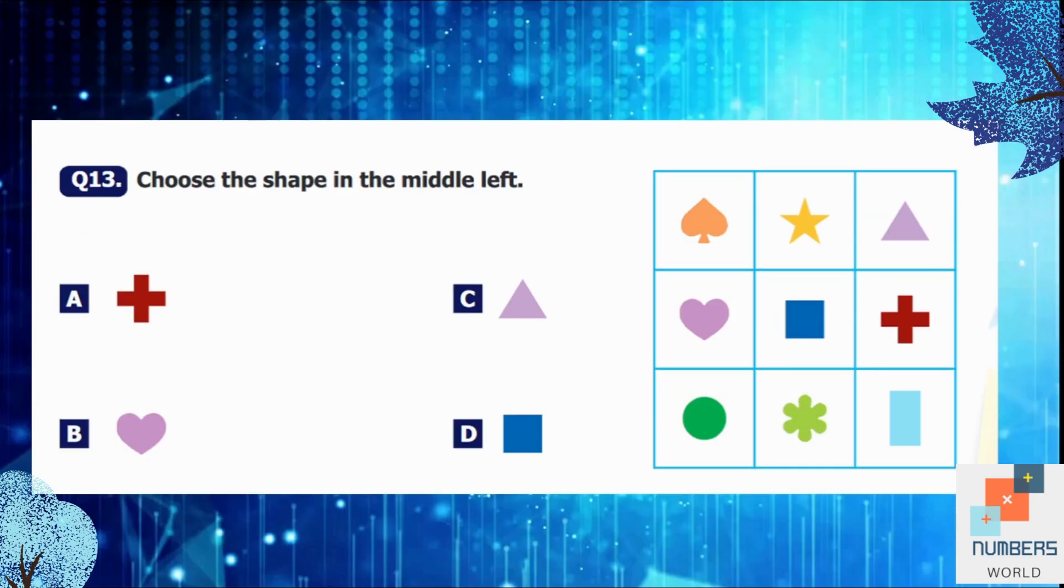Question number 13: Choose the shape in the middle left. So first of all, we are going to find the middle or center of the given shapes, which is a square, and on the left side of the square is a heart. So option B is our answer.